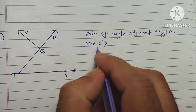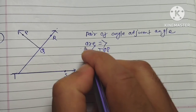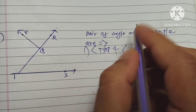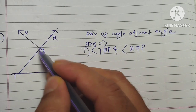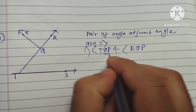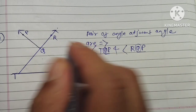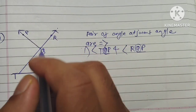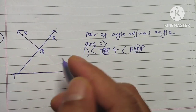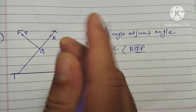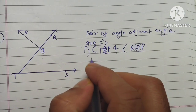Angle TQP and angle RQP: the common arm is QP, the vertex Q is common, and the separate interiors are on different sides. Angle TQP has its interior on one side and angle RQP has its interior on the other side. There is one and only one pair in this figure.